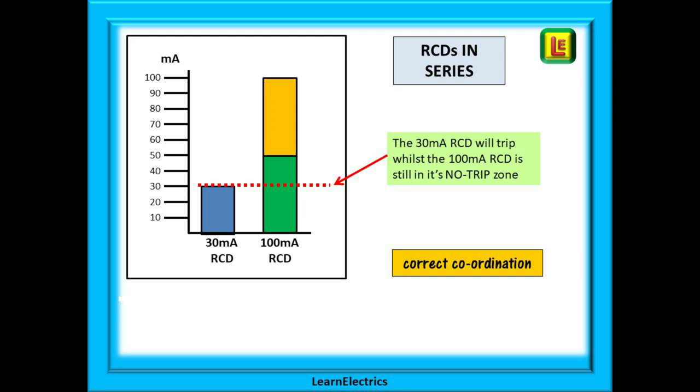If we compare a 30 milliamp RCD to a 100 milliamp device we can see the reason for this 3 to 1 requirement. If these two devices are cascaded together in other words in series and a 30 milliamp fault is detected then only the 30 milliamp device will trip since 30 milliamps is still in the no trip zone for the 100 milliamp RCD.